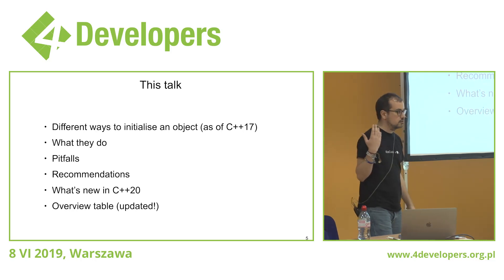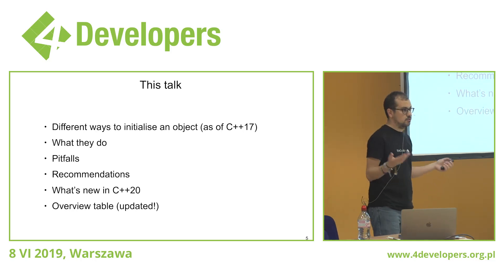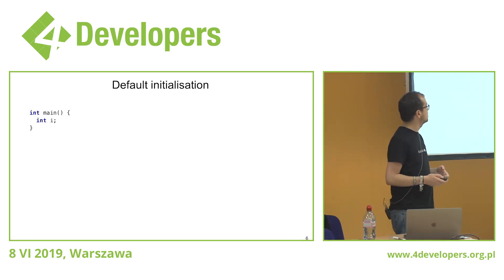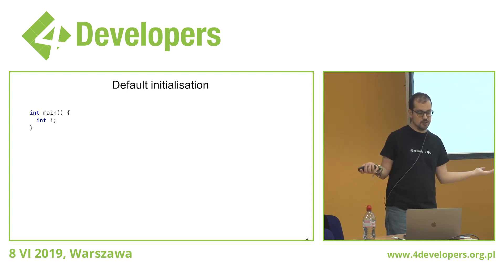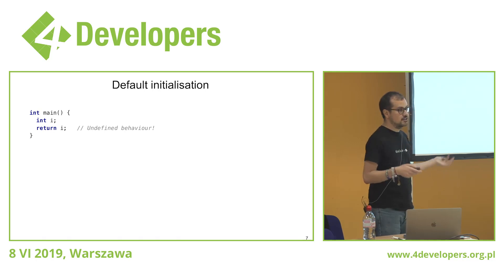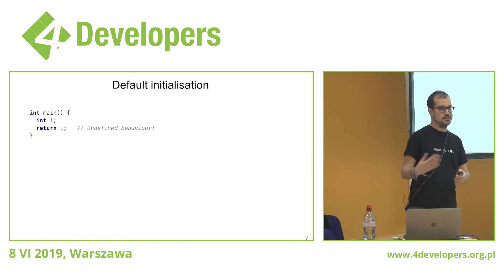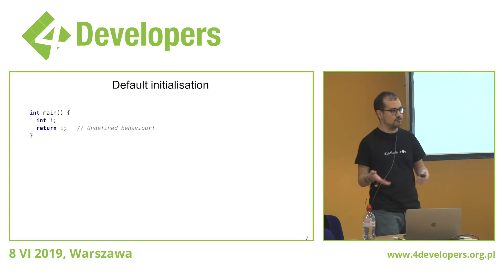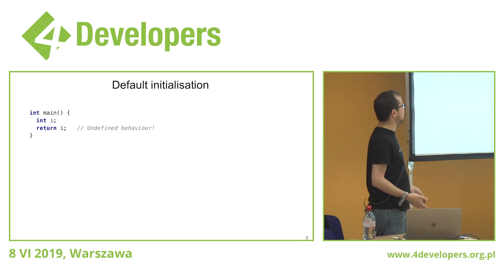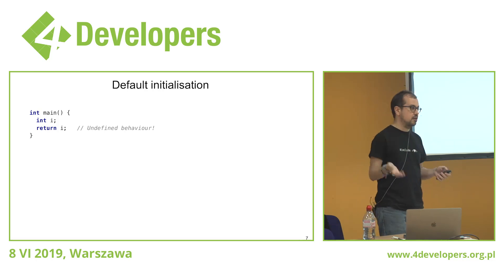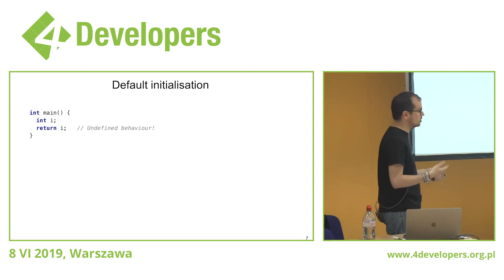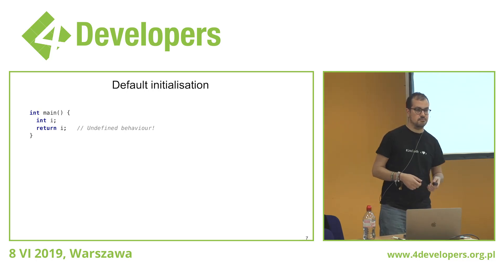Obviously, the first type of initialization we're going to talk about is called default initialization, which means you actually don't initialize the variable at all — like `int i`. This is called default initialization. I think it's a bad name because you don't actually initialize it, so why is it called default initialization? I don't know, but that's the way it's called. In C++, if you have an uninitialized variable and you access its value, that's undefined behavior.